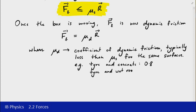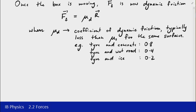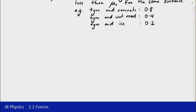A tire and wet road decreases and is now 0.4. And a tire and ice is 0.2. So basically it means that once you get something moving, the frictional force is actually slightly less than what it requires to get it moving in the first place.